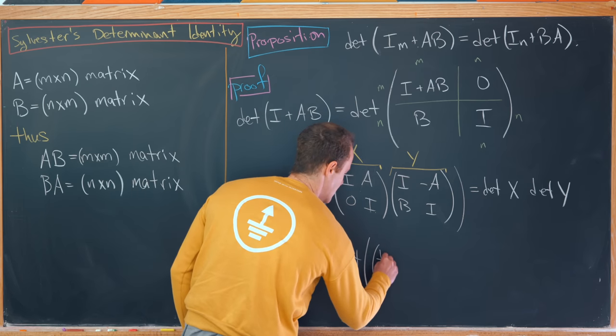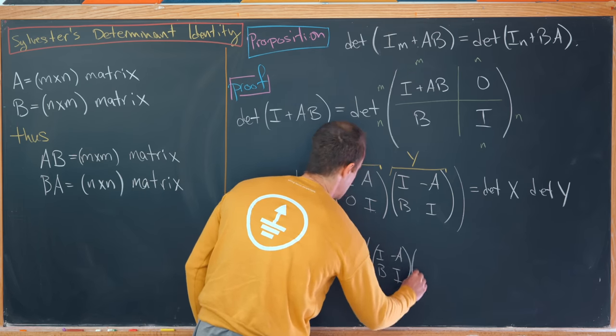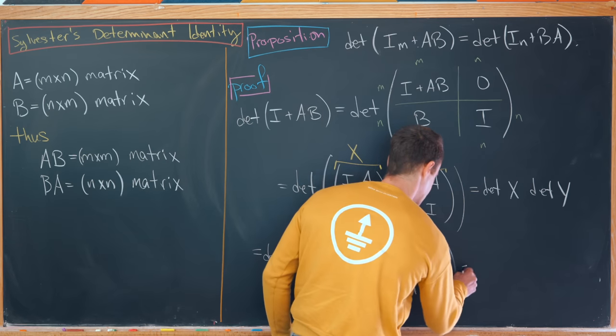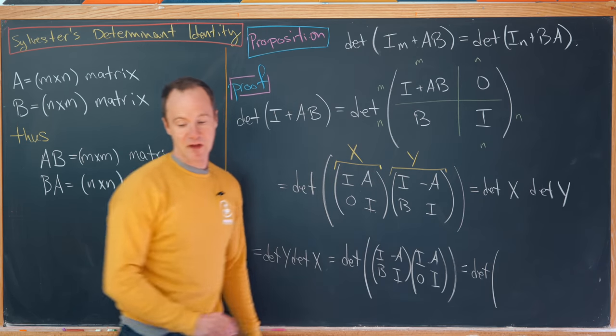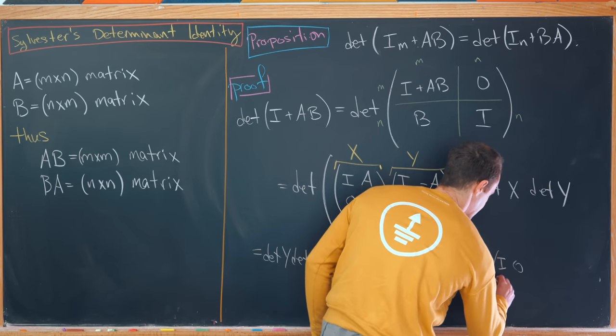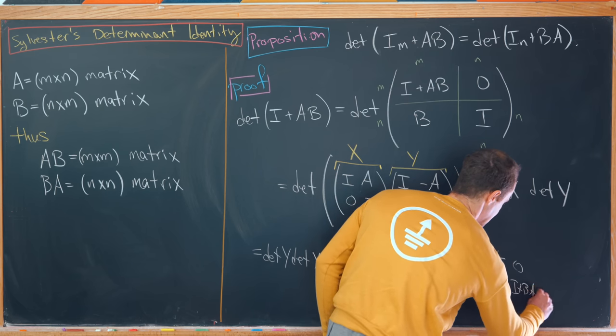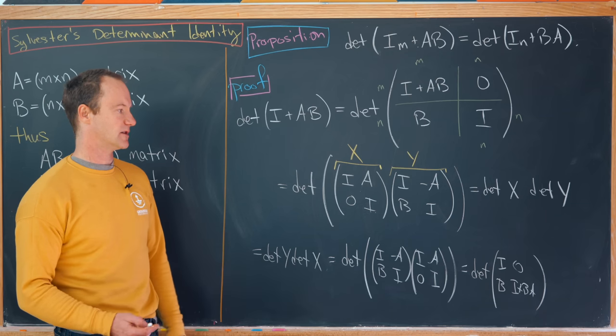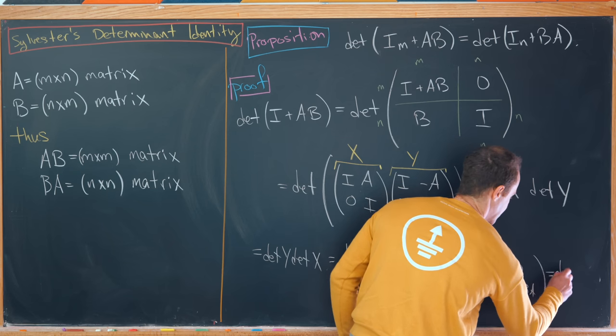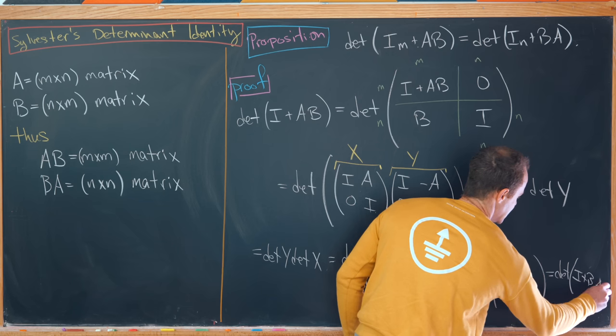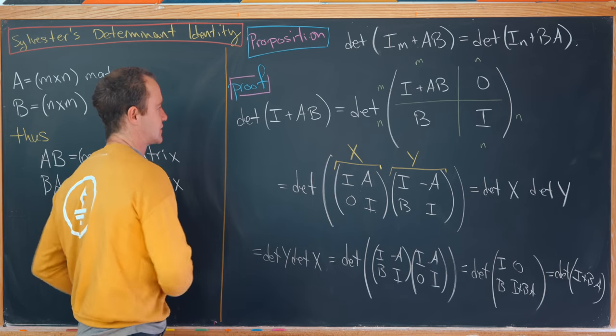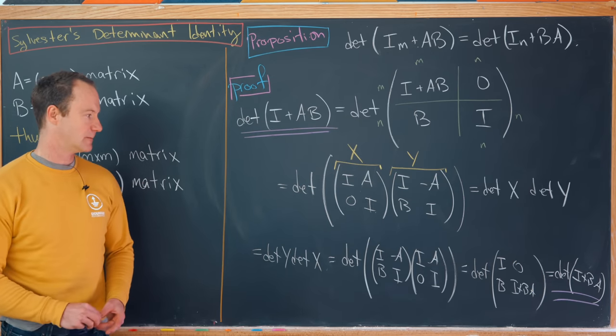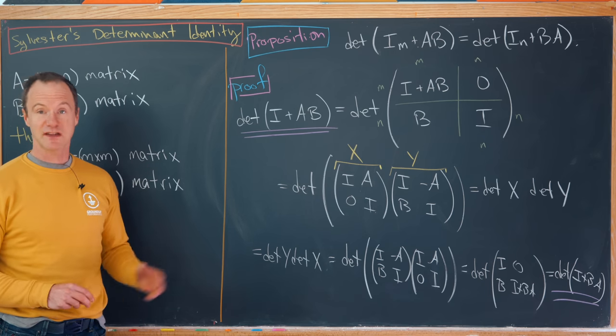Let's rewrite those. We have I minus A, B I, and then I A, zero I. But now if we multiply those block matrices, we'll get the determinant of: I, zero, B, and then I plus BA in that lower entry. But now if we take that determinant using standard rules about determinants of block matrices, we get exactly what we want. That is, the determinant of I plus BA. Starting at the extreme left-hand side, we see that we have achieved exactly what we want on this extreme right-hand side. So now that we've done this, albeit short proof, let's look at an example.